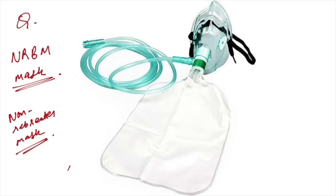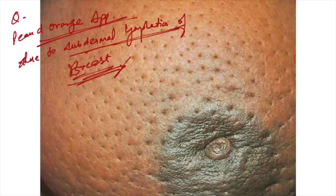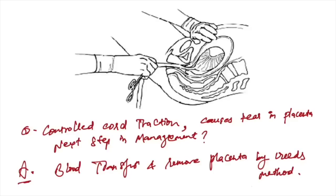This NRBM mask, a non-rebreather mask, was asked about. Now, this peau d'orange appearance is seen in subdermal lymphatics of the breast due to carcinoma. This is the classical peau d'orange appearance seen in carcinoma breast.